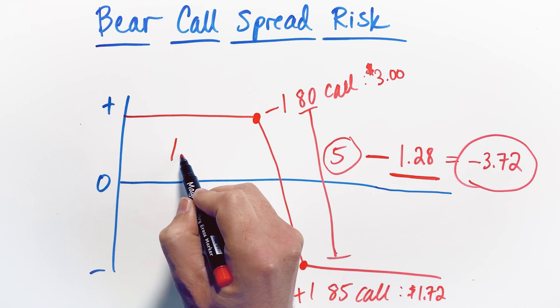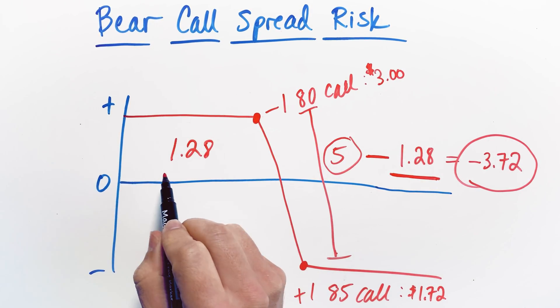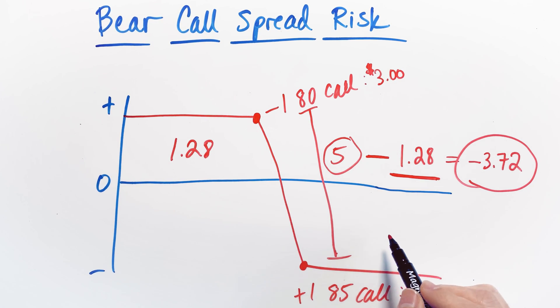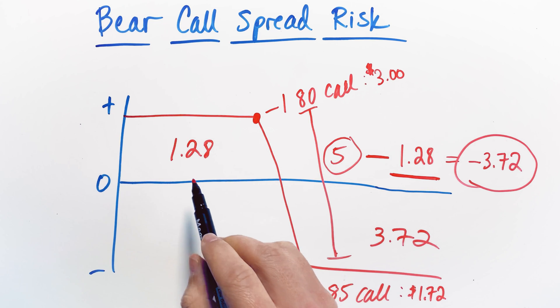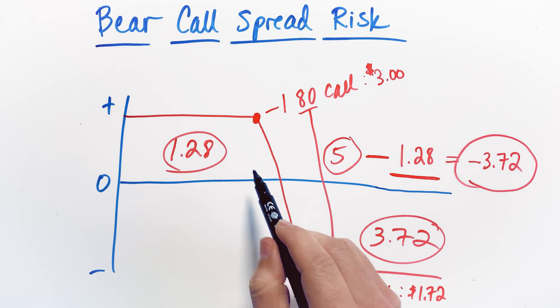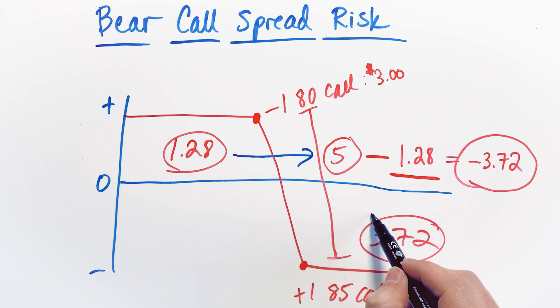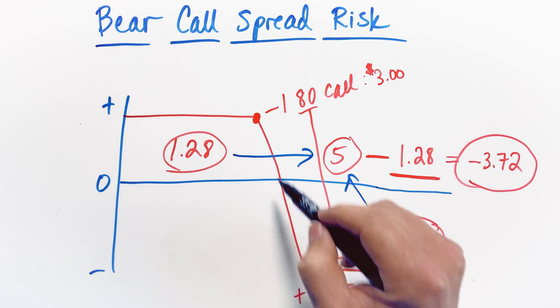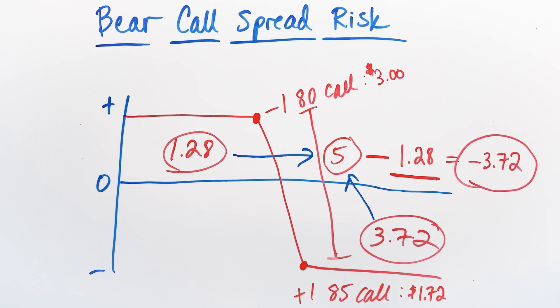You have an opportunity to make $1.28 here. This is your profit potential, but your risk is $3.72. Notice that when you add these two numbers together, and this is the way I think about it in my mind, you add those two numbers together on each side of the payoff diagram and the combination of those gets you to your $5 spread width. And that's how you know that everything kind of balances and makes sense.